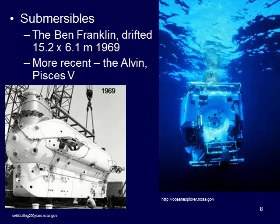Submersibles are another measurement tool. A submersible called the Ben Franklin was actually drifted in the ocean currents — launched in 1969, it was about 15 by 6 meters, not a very big space. People would be inside floating with the currents and tracking where they went. More recent submersibles include the Alvin and the Pisces 5, which don't necessarily drift but can measure different things in the ocean as well.